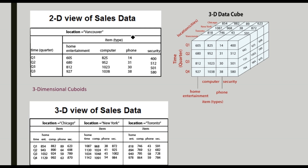Here is another example for understanding the data cube concept. This is a 2D view of sales data: items like home, computer, phone, and security are listed against quarters (Q1, Q2, Q3, Q4) for the location Vancouver. This is only a 2D view. When we add details for other locations — New York, Chicago, Toronto — this becomes a three-dimensional data cube concept, also called a three-dimensional cuboid.